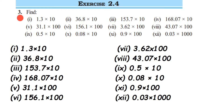It's very simple. Let's start the first question: 1.3 multiplied by 10. In 10, how many zeros do we have? One zero. So the decimal point moves towards the right side. After one digit, we move one digit because there is one zero. So this will become 13.0, which is the same as 13. When multiplying with 10, 100, or 1000, just check the number of zeros and move the decimal point that many places to the right.